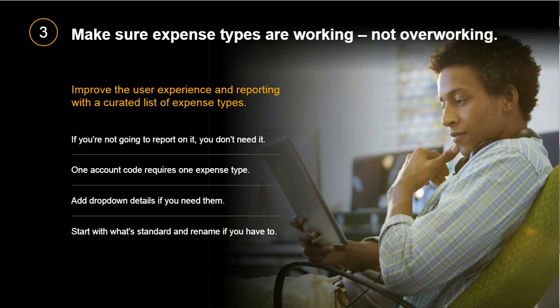Here are a couple of good rules to remember: if you're not going to report on it, you don't need it. If different types of spending have the same account code in your GL, they can likely share the same expense type. Think about meals — if you have a single account code for meals, you don't need different expense types for breakfast, lunch, and dinner. You can have one expense type with drop-down details, for example parking, tolls, etc., all under ground transportation.